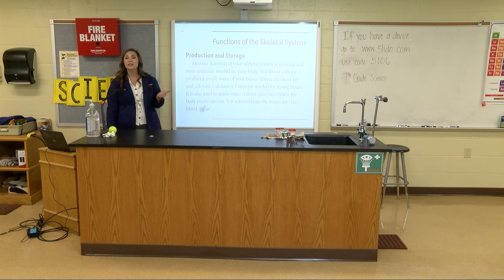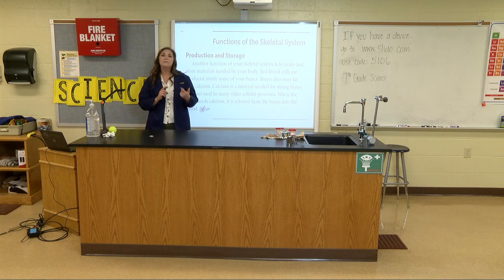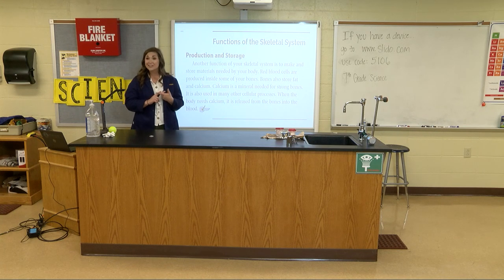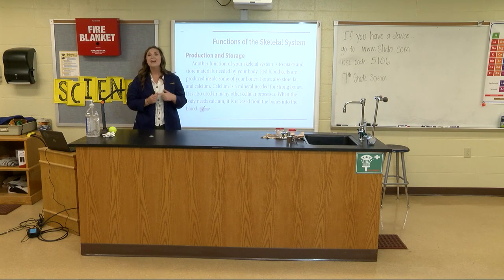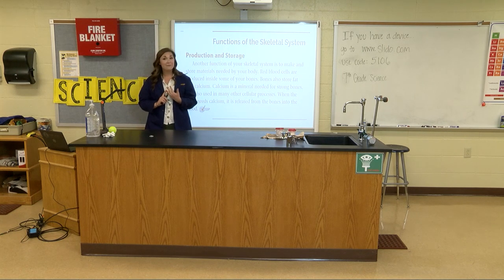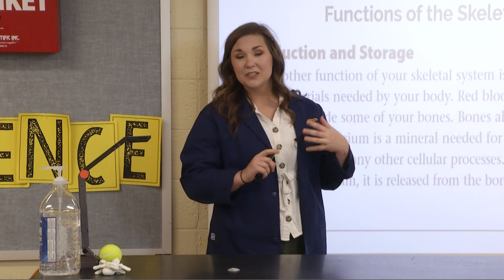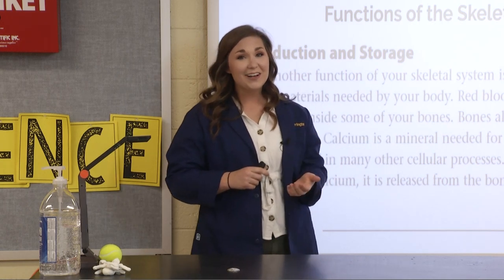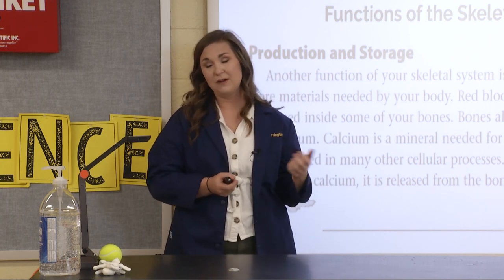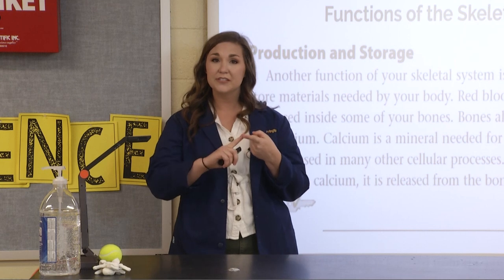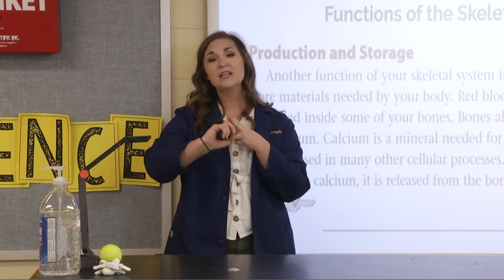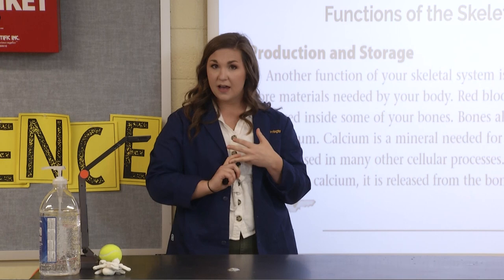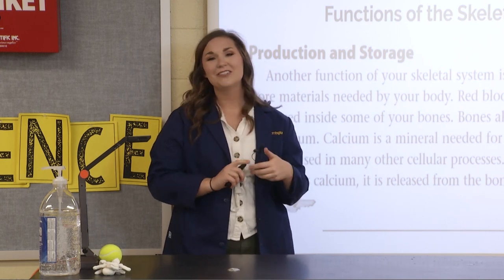Okay, production and storage. We have a few important parts to our bones here. Our red bone marrow makes red blood cells. We also have yellow bone marrow which stores fat for us. Those parts of the bones can also create and store calcium for our body, which is really important to get to certain parts of our body. So bones produce and store red blood cells, fat in the yellow bone marrow, and also calcium.